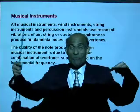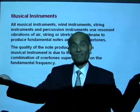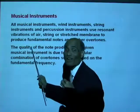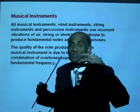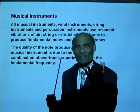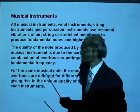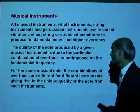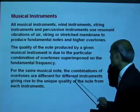Although the same frequency notes are produced by different instruments, they can be traced back to where they came from due to that particular quality. What is the quality due to? Each instrument has that unique combination of higher harmonics along with the fundamental, giving that unique quality. For the same musical note, the combinations of the overtones are different for different instruments, giving rise to that unique quality of the note from each instrument.